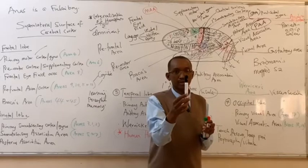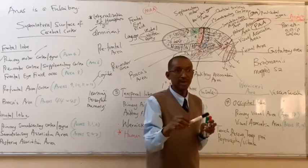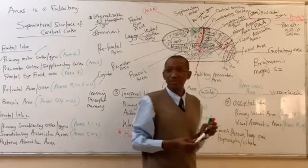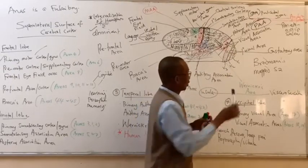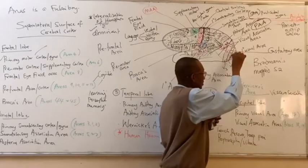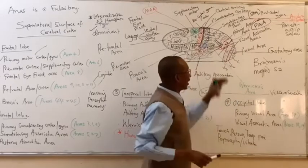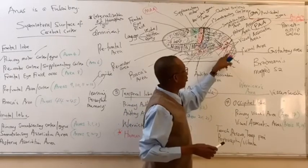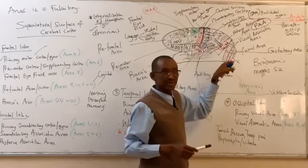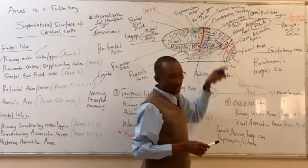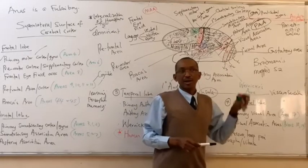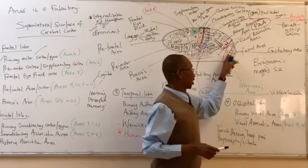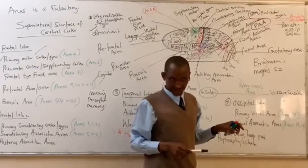Once something comes to your visual field, you will see it, and area number 17 will receive the information — it will receive the visual stimulus. That means you will see the image. Area number 18 lies anterior to area 17, and together with area 19, they are also areas on the occipital cortex referred to as visual association areas or visual association cortex.